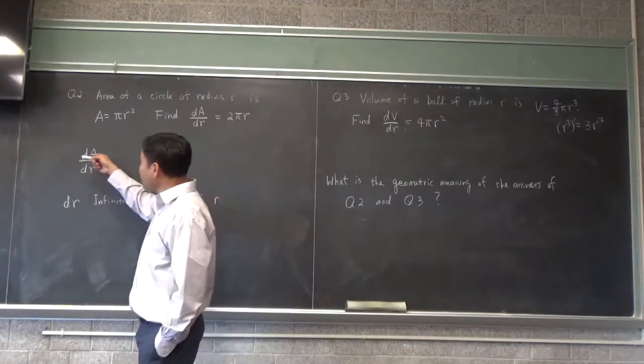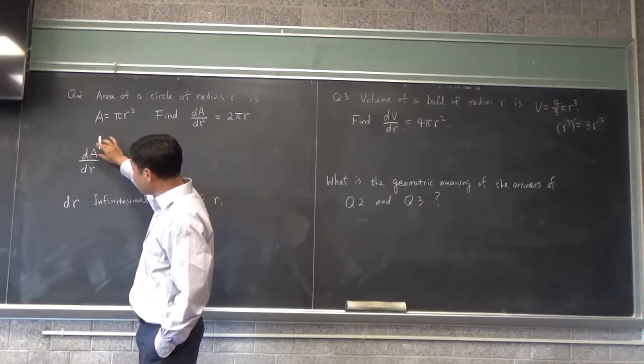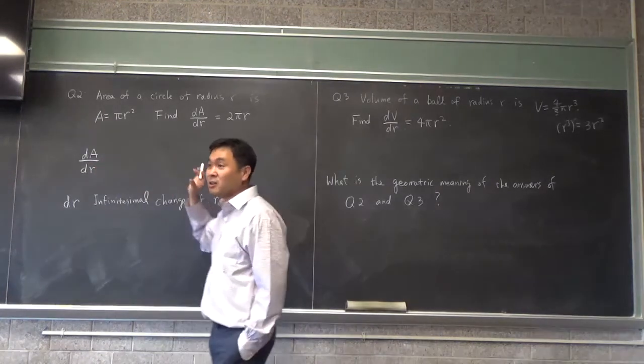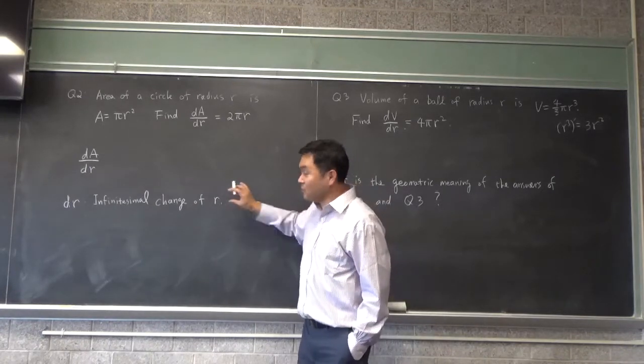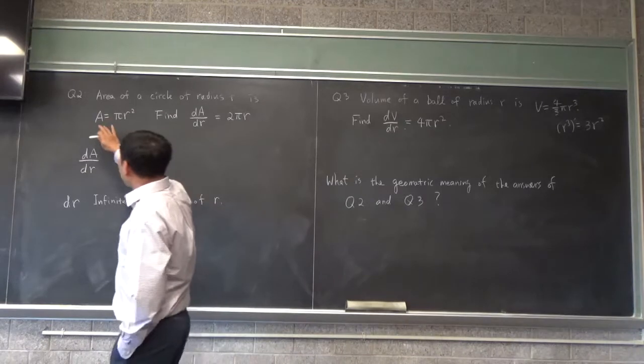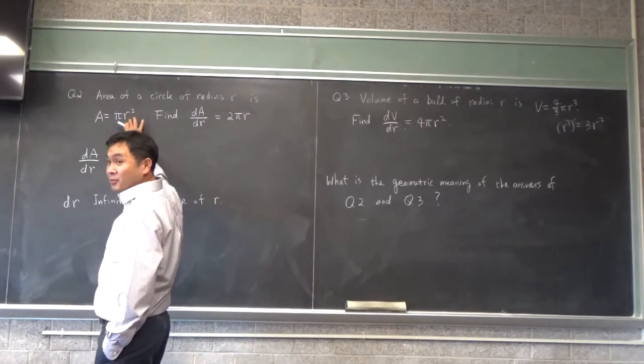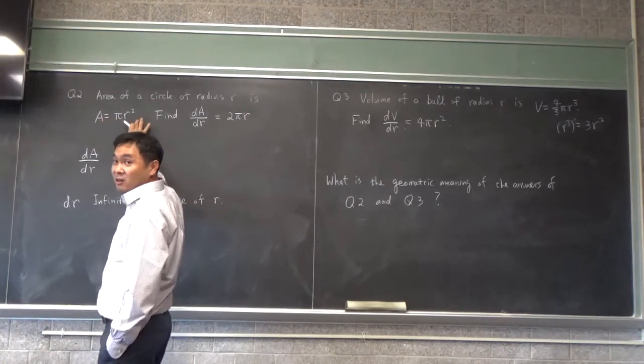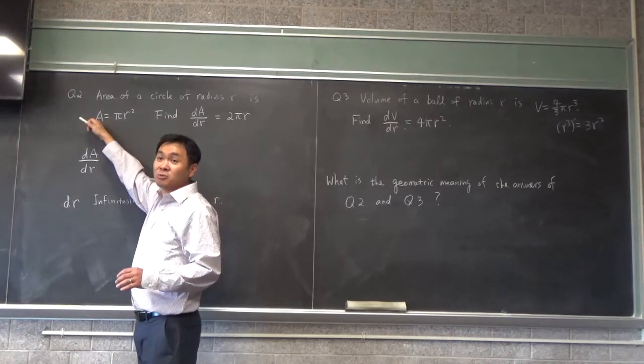And you're taking these ratios of two quantities, right? You're taking the ratio of an infinitesimal change of A with respect to infinitesimal change of R. And it has some additional meaning that this definition alone does not capture, which is the following. Look at this A and R. They're related, right? R is what we call an independent variable. A is what we call the dependent variable. A depends on R. In other words, if you change the value of R, what's going to happen? A is going to change.